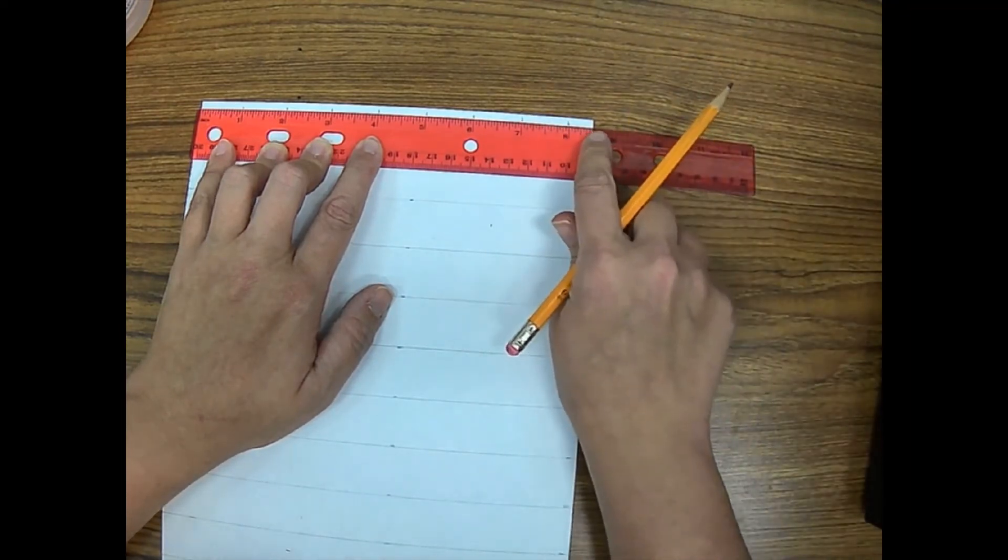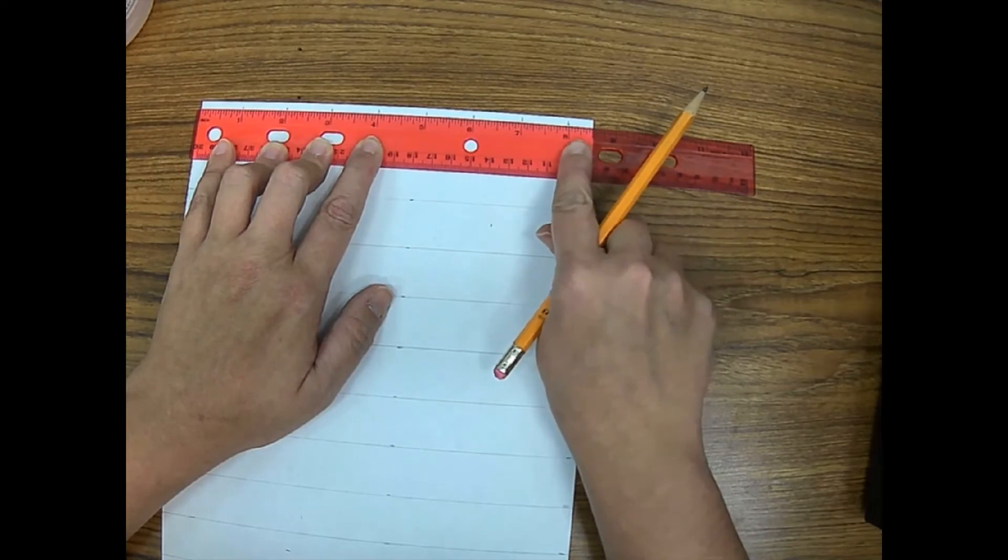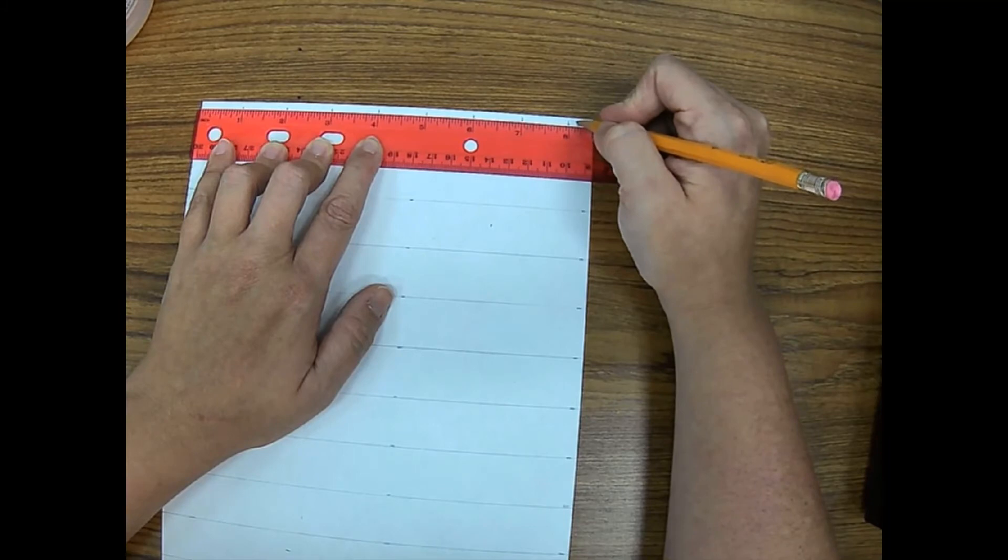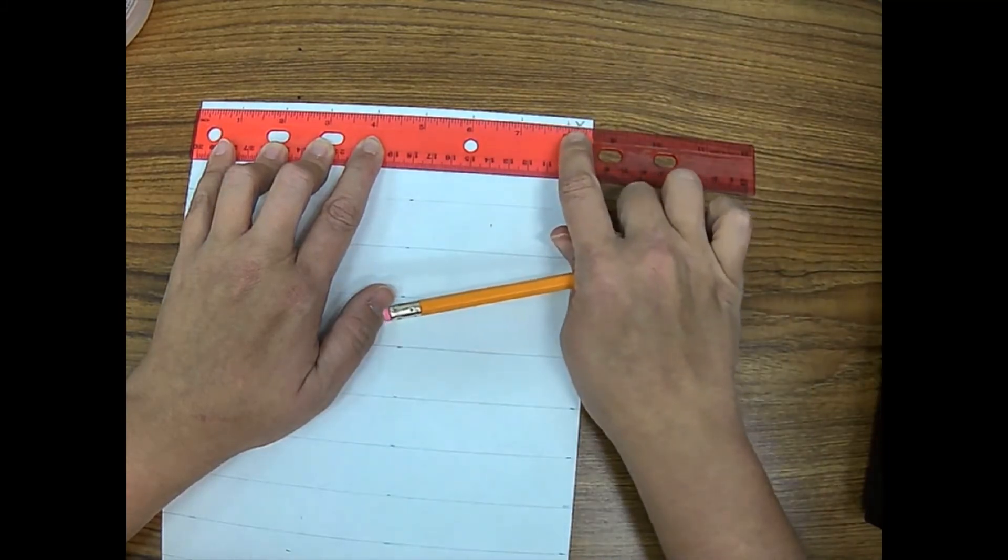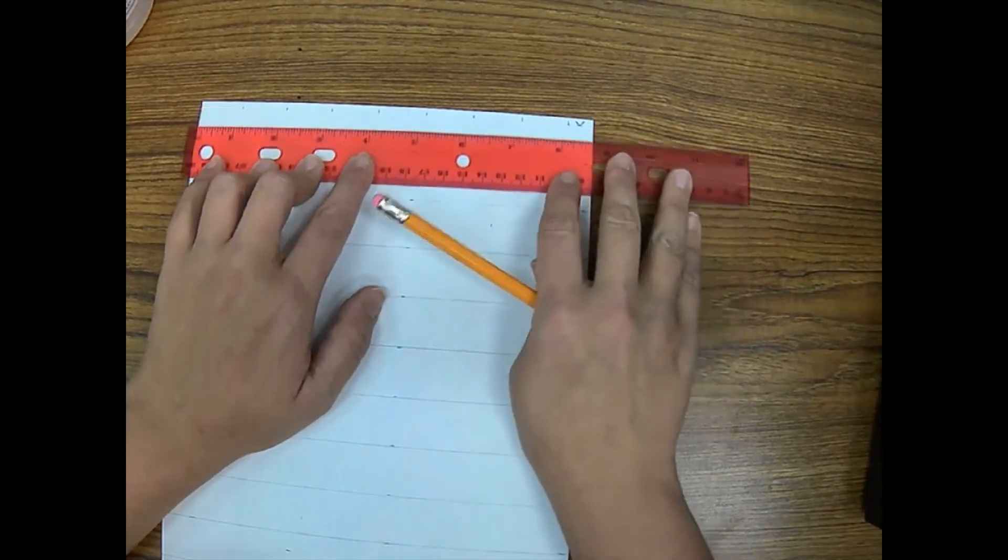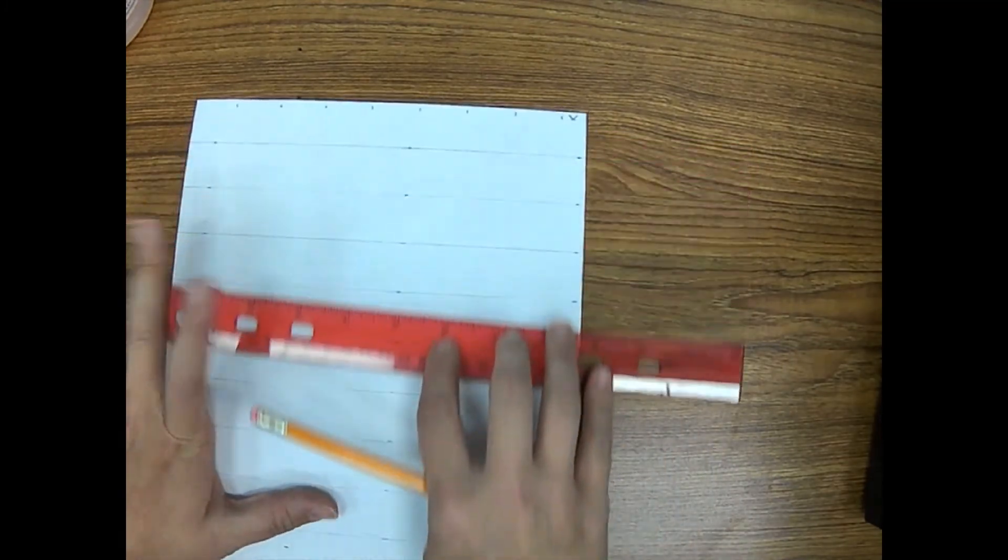And so you can see right here, there's a half an inch that we are not going to use. So just to show you that that's not going to be in use, I'm getting a little X there. I will clip this paper off right there.